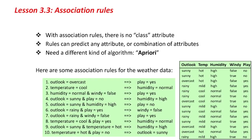Association rules are about finding associations between attributes — between any attributes. There's no particular class attribute. Rules can predict any attribute, or indeed any combination of attributes. For this we need a different kind of algorithm, the one that we use in Weka. The most popular association rule algorithm is called A Priori.